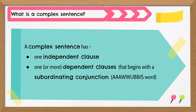Some AWUBAS words include: although, when, unless, before, if, and since — just to name a few. When you put an AWUBAS word at the beginning of a clause, it is no longer a complete thought. It now depends on the independent clause to make sense. That's why it's called a dependent clause.